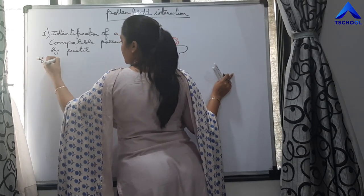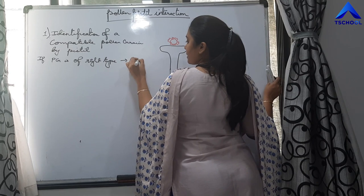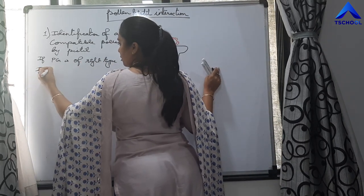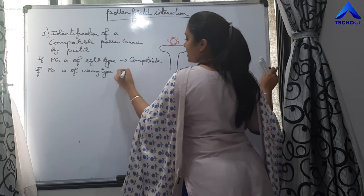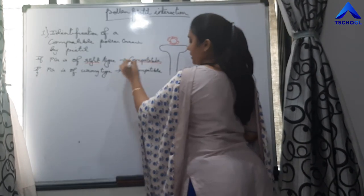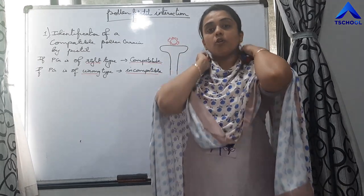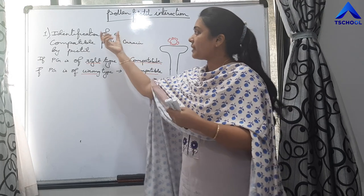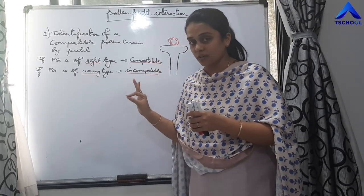If the pollen grain is of the right type, it is called compatible. If the pollen grain is of the wrong type, it is called an incompatible pollen grain. The pistil is going to identify whether the pollen grain is compatible — that is, of the right type.